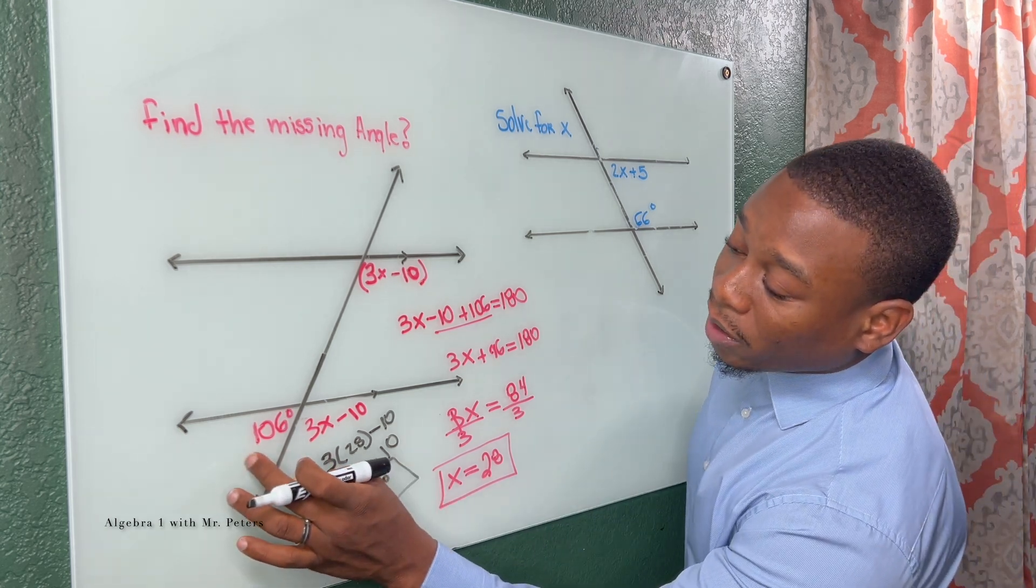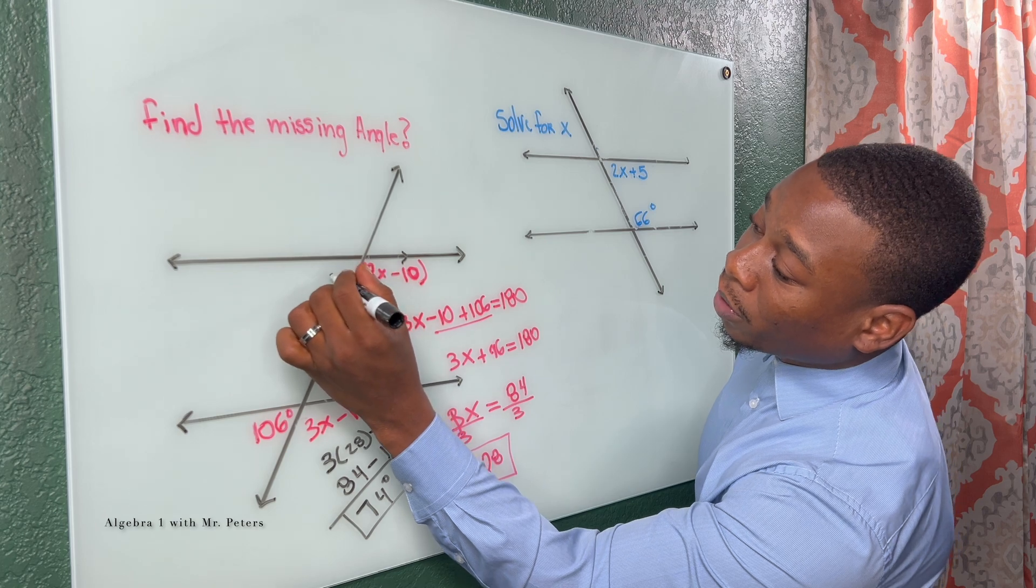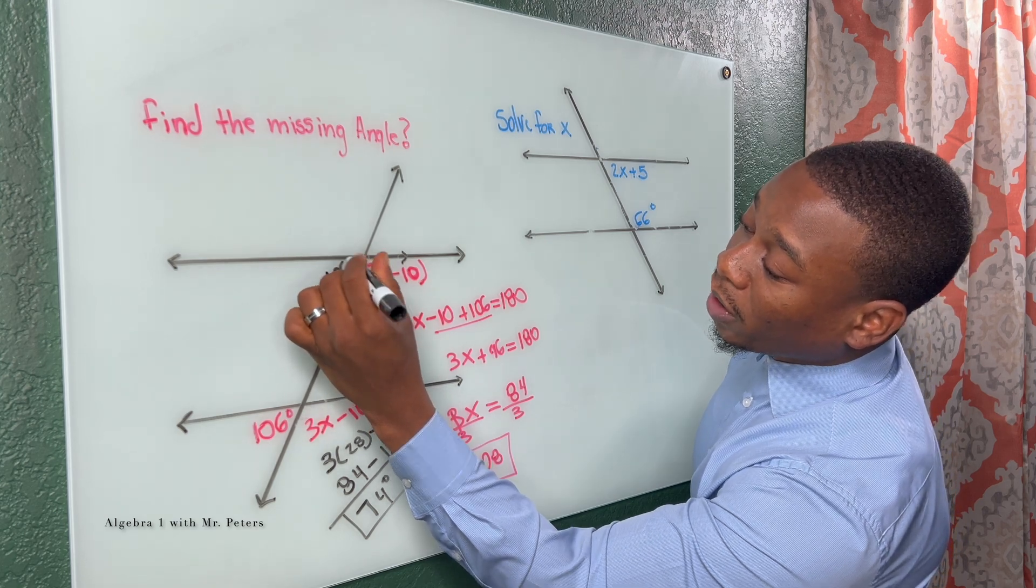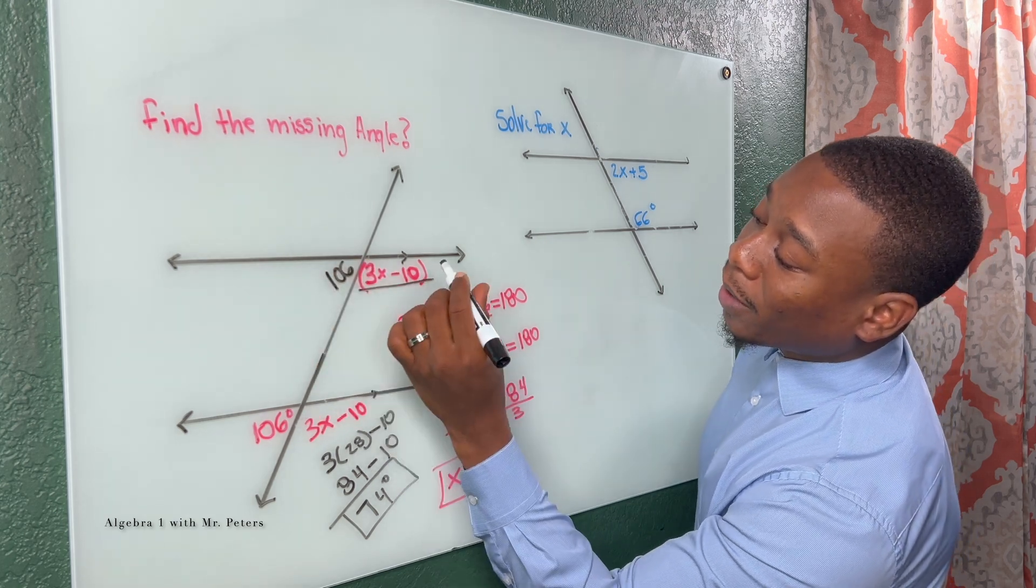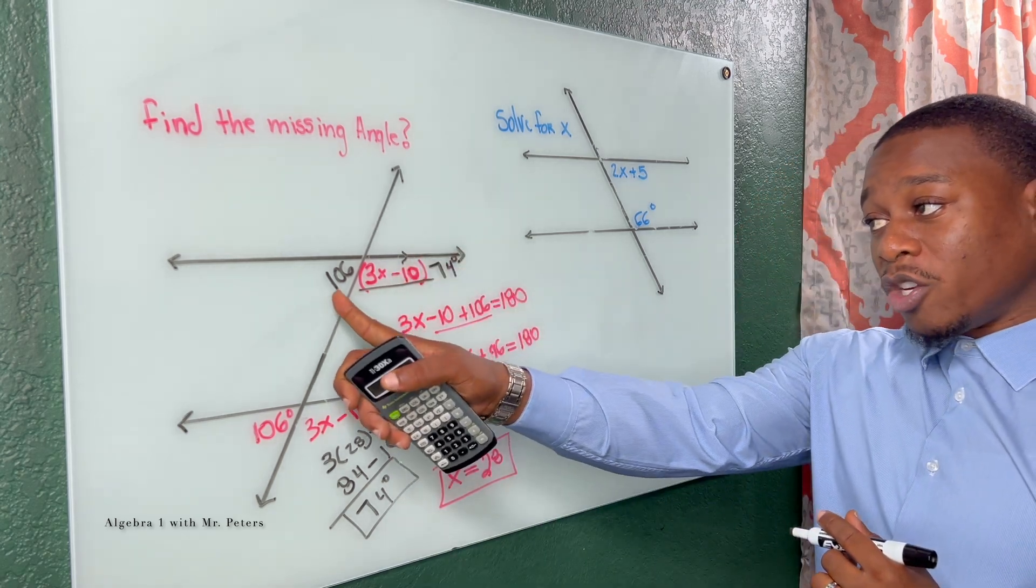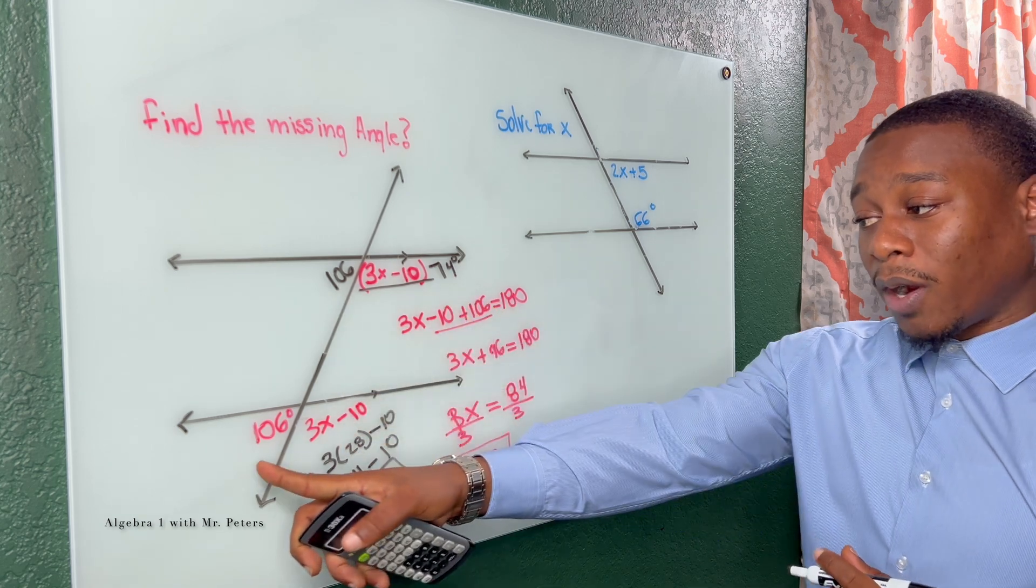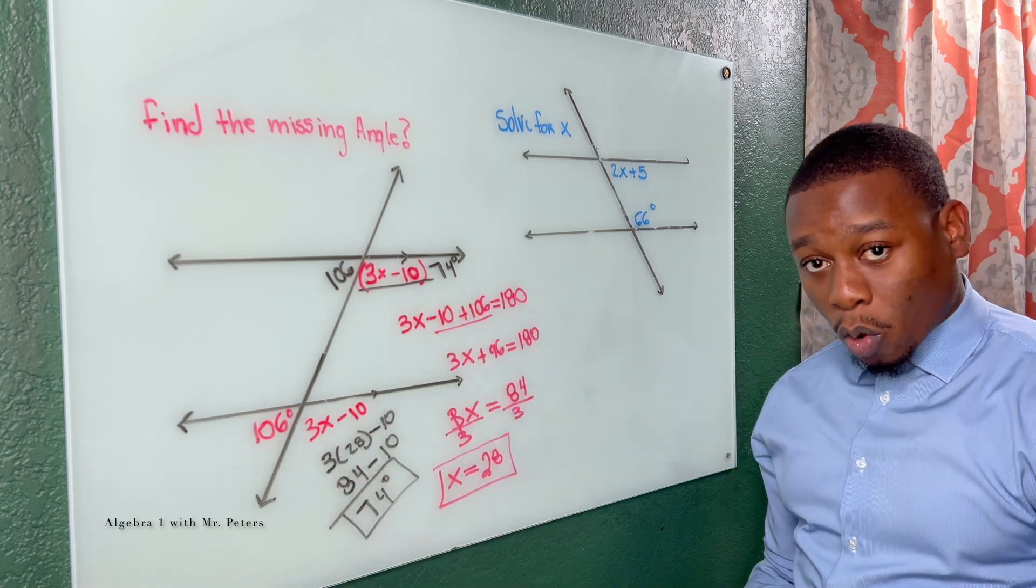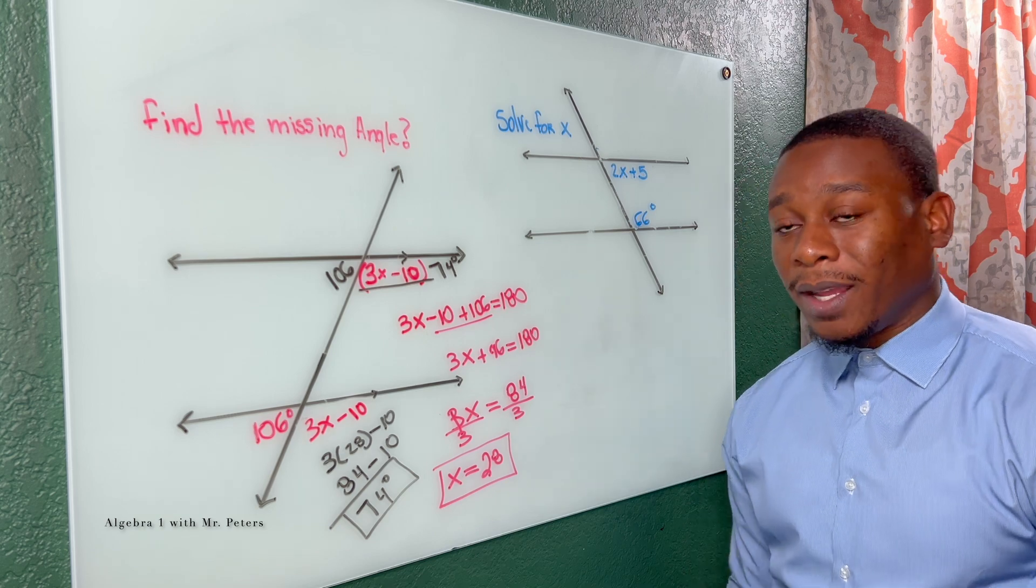So if this angle is 106 and it's corresponding to this angle, this angle is also 106 and now I know 3x minus 10 is equal to 74 degrees. And when I add these back, 106 and 74, it's going to give me 180. So I know that this is correct.